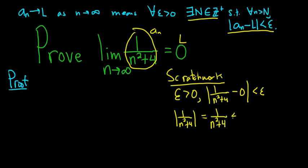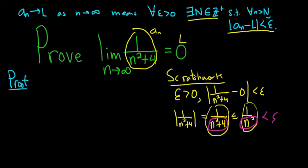So this is 1 over n squared plus 4, and this is less than or equal to 1 over n squared. The reason is the fraction on the left is smaller than the fraction on the right because n squared plus 4 is bigger than n squared, so this fraction is smaller than the one on the right. And we want this to be less than epsilon.